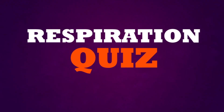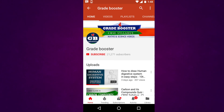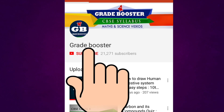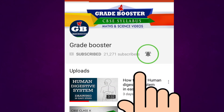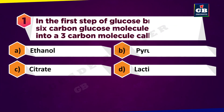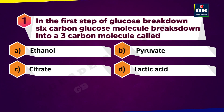Respiration quiz. In the first step of glucose breakdown, a six-carbon glucose molecule breaks down into a three-carbon molecule called: A. Ethanol, B. Pyruvate, C. Citrate, D. Lactic acid.